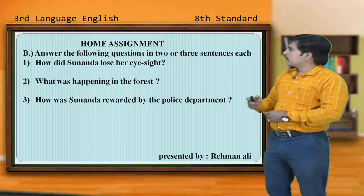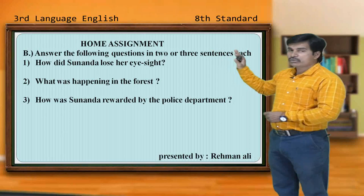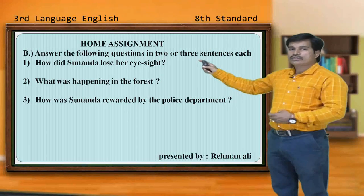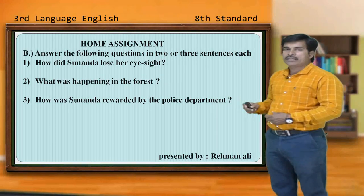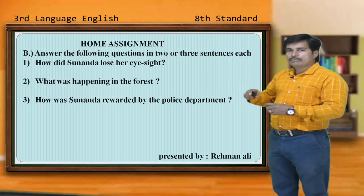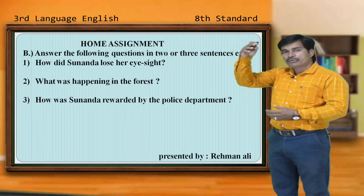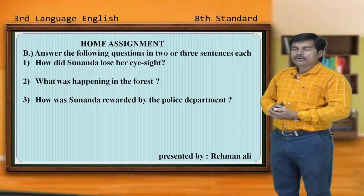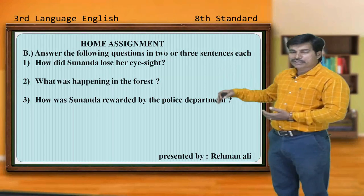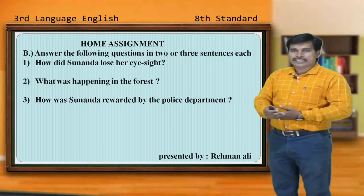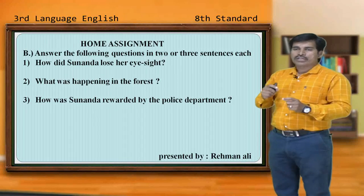That's all. At last, observe the home assignment — answer the following questions in two or three sentences. One: how did Sunanda lose her eyesight? Two: what was happening in the forest? Three: how was Sunanda rewarded by the police department? For these questions, observe and go through your textbooks, find the answers, write them all, and show it to your teacher. Hope you have all understood the lesson Sandalwood Trees and the grammar part of this particular lesson. Once again, go through the textbook, write the answers, make a proper note, and show it to your teacher.